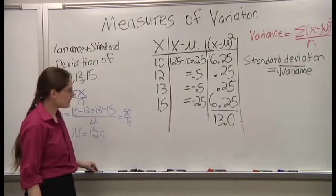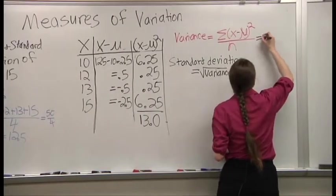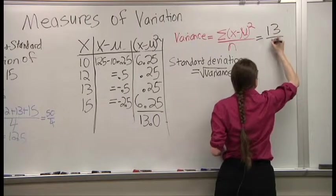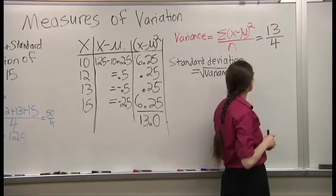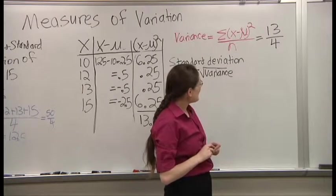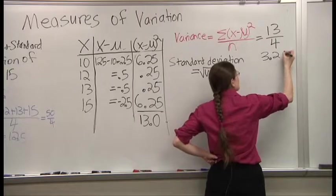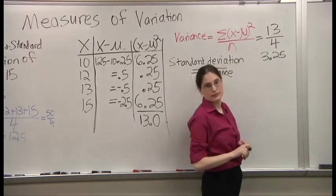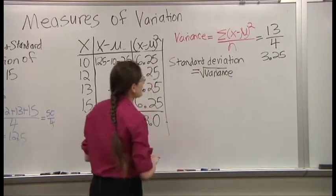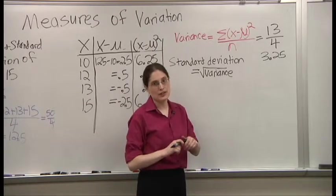So, the variance is going to be 13 divided by 4, which would be 3.25. Take the square root of that. You got your standard deviation.